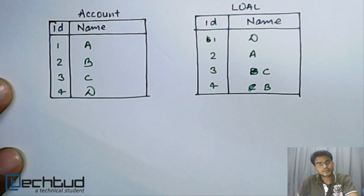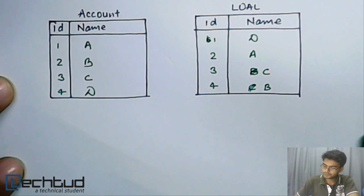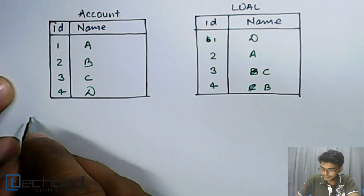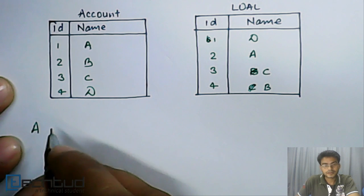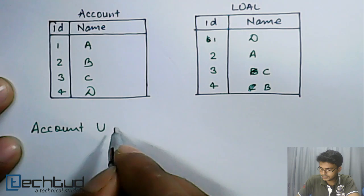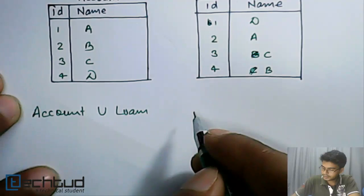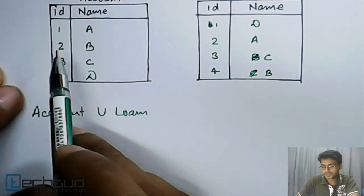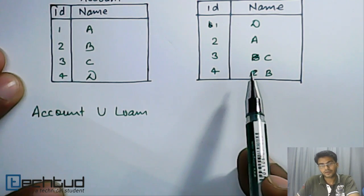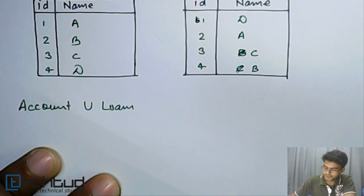Let's take an example. Here we have two tables, account and loan, and we have to find out a customer and record of customers who have either account or loan or both. Then what we will do is perform union between account and loan, and then we get the result.